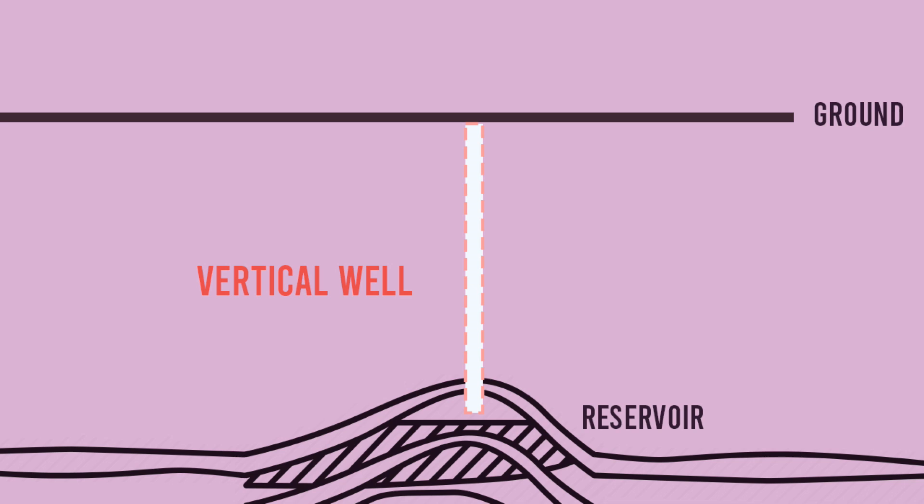Next, we have the build and hold profile, also known as the J profile. In this design, the well starts vertically, then gradually builds an angle until it reaches the desired inclination, and it holds that angle until it penetrates the reservoir. This profile is used when the target reservoir is not directly below the drill site.